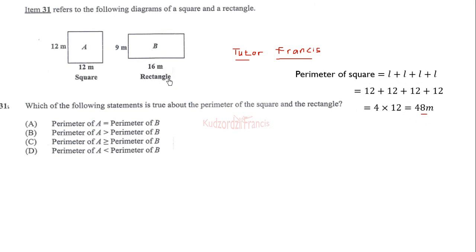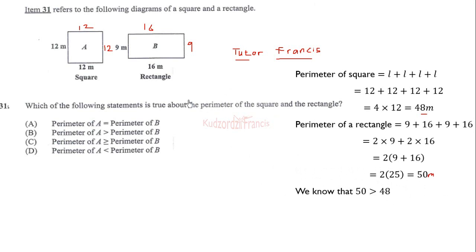The perimeter of a rectangle is equal to 9 plus 16 plus 9 plus 16, which is adding the distance all around. This is also 9 and this one too is 16. So adding all around will give us that. We have two of the 9's and two of the 16's, so we factor the 2 out: 2 times (9 plus 16). Doing it like this makes the addition easier. 9 plus 16 is 25, 2 times 25 is 50 meters. So the perimeter of the rectangle is 50 meters. 50 is greater than 48, so the perimeter of square A is less than perimeter of B. Option D is the correct choice.